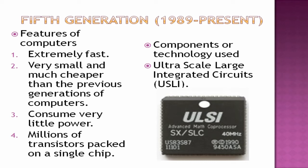Currently, computers work only with our instructions — if you switch on the computer and sit in front of it, nothing will happen without your input. In the future, artificial intelligence will be developed — intelligence that can be artificially placed on machines. Even robots today require instructions to work. Devices like microwave ovens and washing machines that seem automatic only work when you set their timings — that is not true artificial intelligence. True AI is what the next generation of computers aims to achieve.